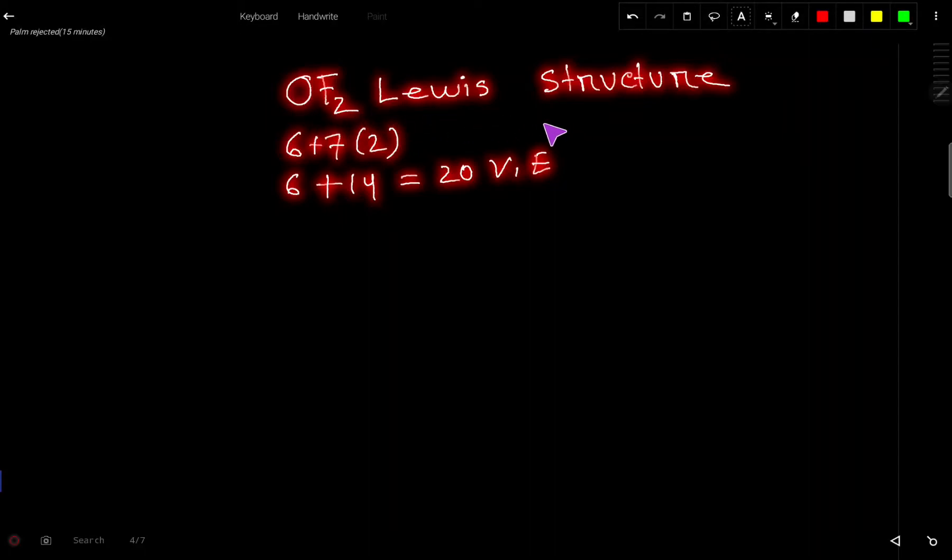Okay, OF2 Lewis structure or Lewis dot structure for OF2, oxygen difluoride. First, we have to find out the valence electrons for this molecule.